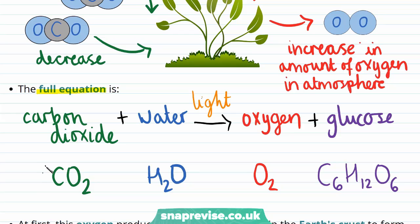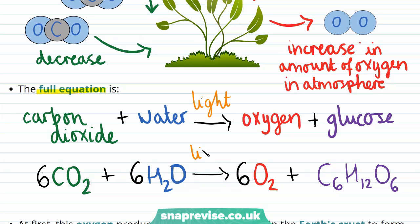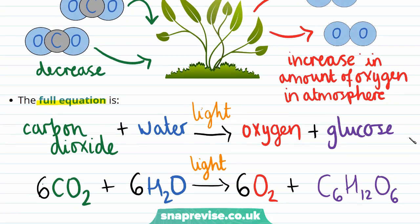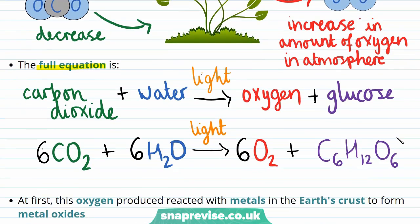We can balance this equation by adding sixes in front of everything apart from glucose, and if you look carefully you'll see that this equation is now balanced. When talking about photosynthesis it's really important to remember that light is needed, so we'll write this over the reaction arrow. So we've seen that plants take in carbon dioxide and produce oxygen.